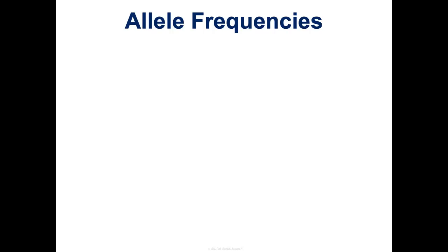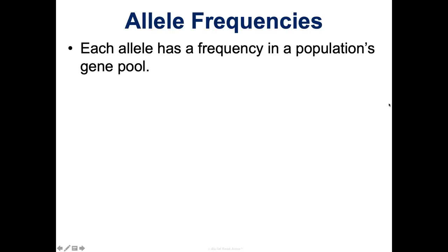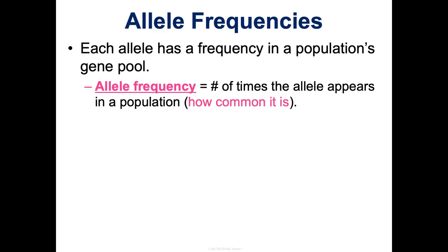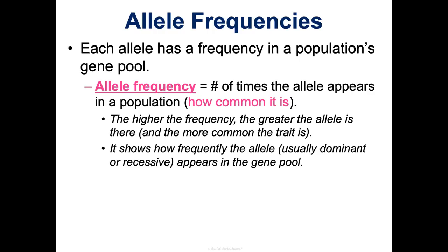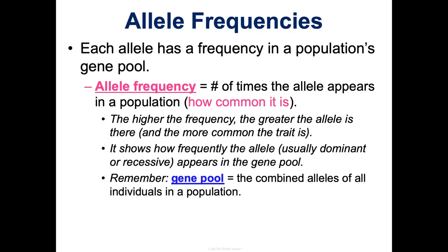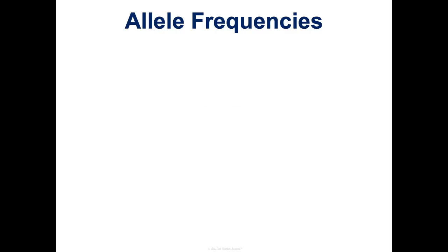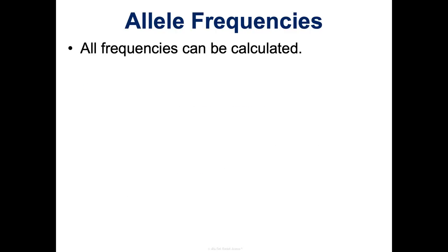This is not everyone's favorite thing, but it's really important — we're going to talk about the math. Every allele in a population has a frequency in the population's gene pool, meaning how many times it's showing up — how common is it? 60% of the population might have it, or 40%. The higher the frequency, the more common the allele is, showing how frequently it's appearing in the gene pool. The gene pool is just the combined alleles of all individuals in a population. We can calculate these, and that's good because we can look over time and see if allele frequencies are changing — because that's evidence that evolution has occurred.